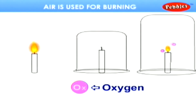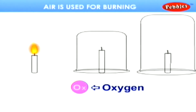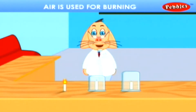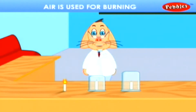Cover the second and third candles with a small and big glass jar. It is observed that the candle covered with a small jar goes out earlier than the candle covered with a big jar, because of the more air present inside it. Also, we can note that the candle left uncovered goes on burning due to the air in the atmosphere. This shows that the flame needs air to burn.